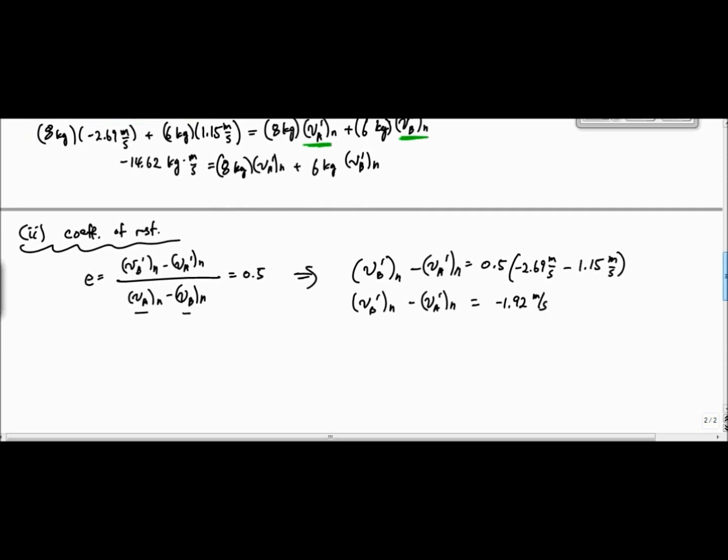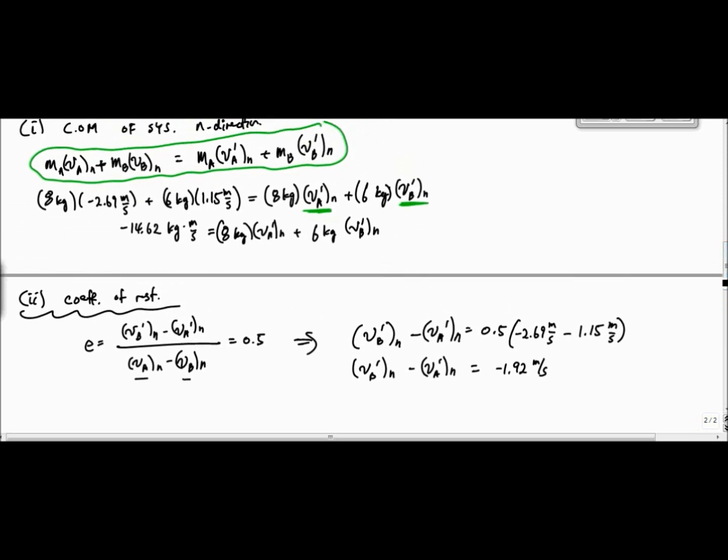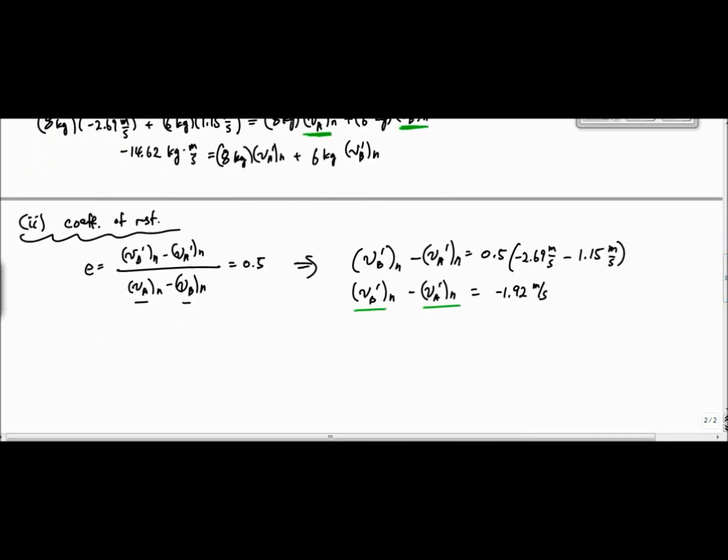And I bust my regular algebra here. I have now two equations, two unknowns. And I can solve two equations, two unknowns. And that tells me that I get VB prime of N is equal to minus 2.14 meters per second, and VA prime of N is equal to minus 0.22 meters per second.